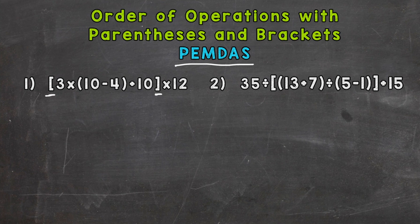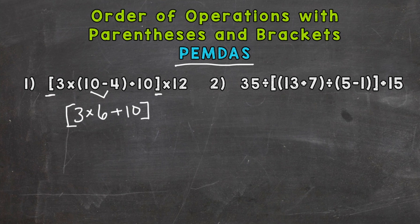We need to go through our PEMDAS steps within those brackets. Do we have any parentheses? Yes, so that's what we do first. 10 minus 4 gives us 6. And we can bring down everything we did not use yet, including those brackets.